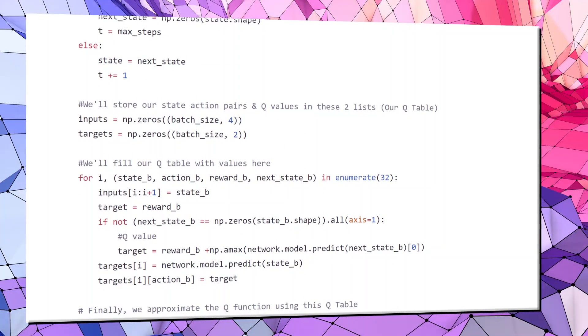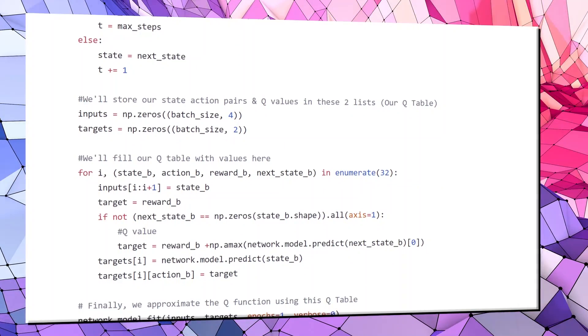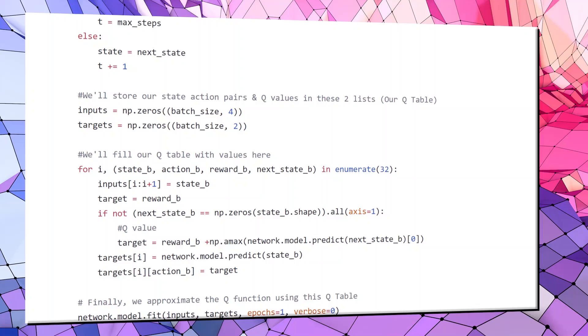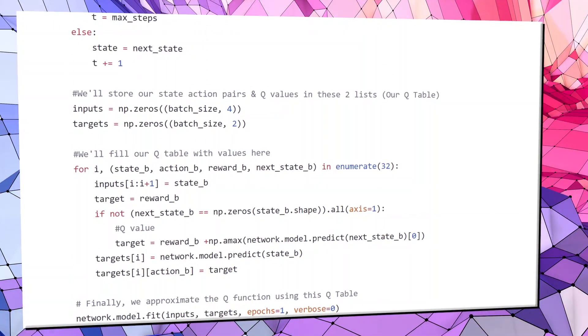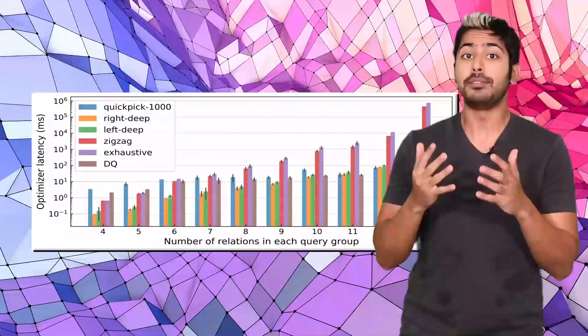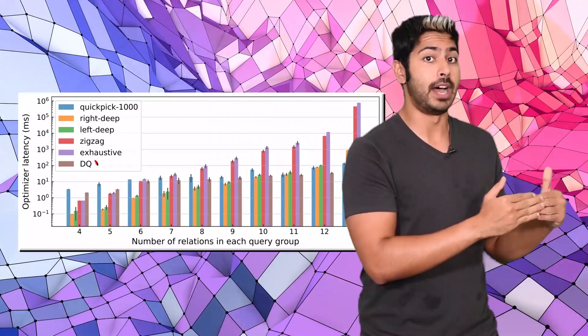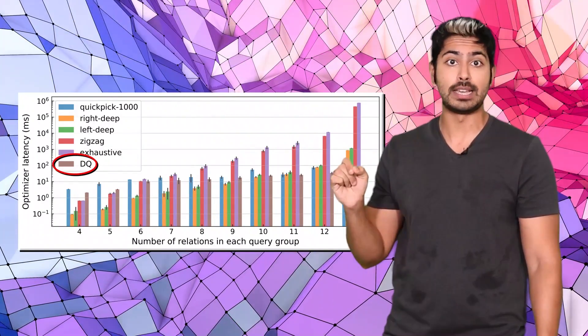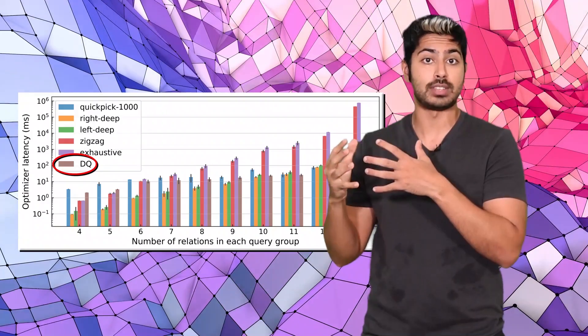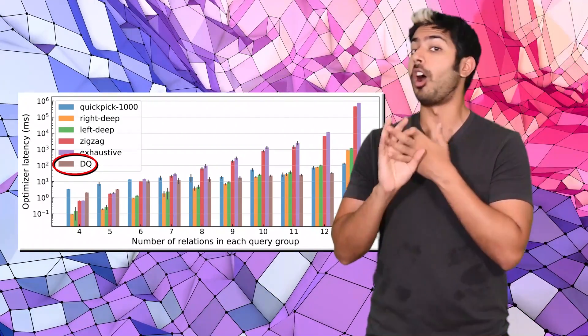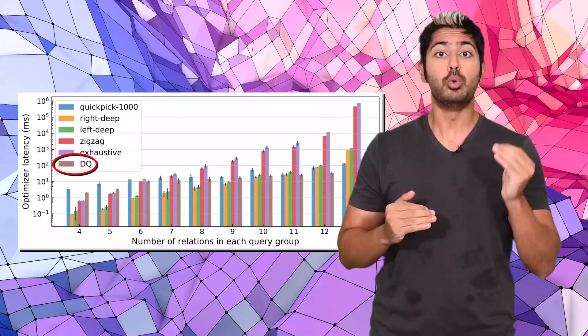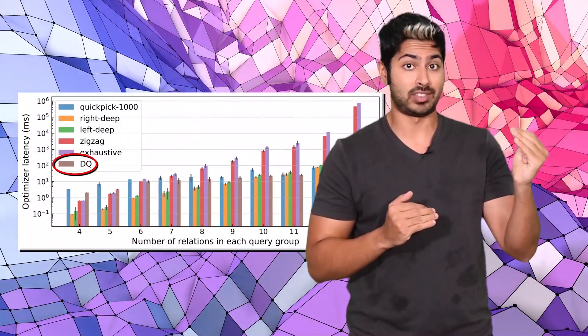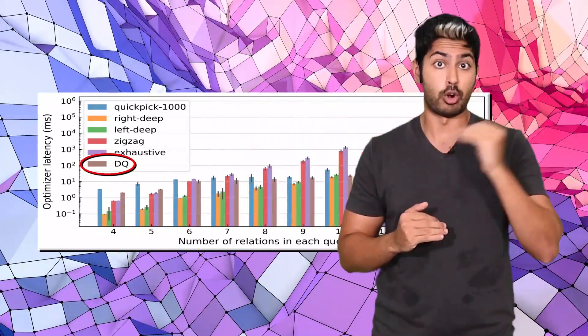Across all cost models, DeepQ is competitive with the optimal solution without a priori knowledge of the index structure. We can safely say that learning-based optimizers are more robust than hand-designed algorithms because they can adapt to changes in data, workload, or cost models. For the largest joins, DeepQ wins by up to 10,000x compared to exhaustive enumeration.